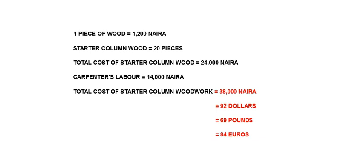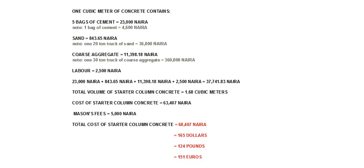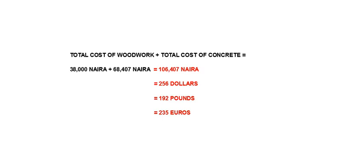Next we'll move over to the starter column concrete. The cost of woodwork for the starter column concrete will be 38,000 Naira, approximately 92 dollars, 69 pounds or 84 euros. And then the concrete itself for the starter columns is 68,407 Naira, approximately 165 dollars, 124 pounds or 151 euros. The total cost of the starter column concrete is 106,407 Naira, approximately 256 dollars, 192 pounds or 235 euros.